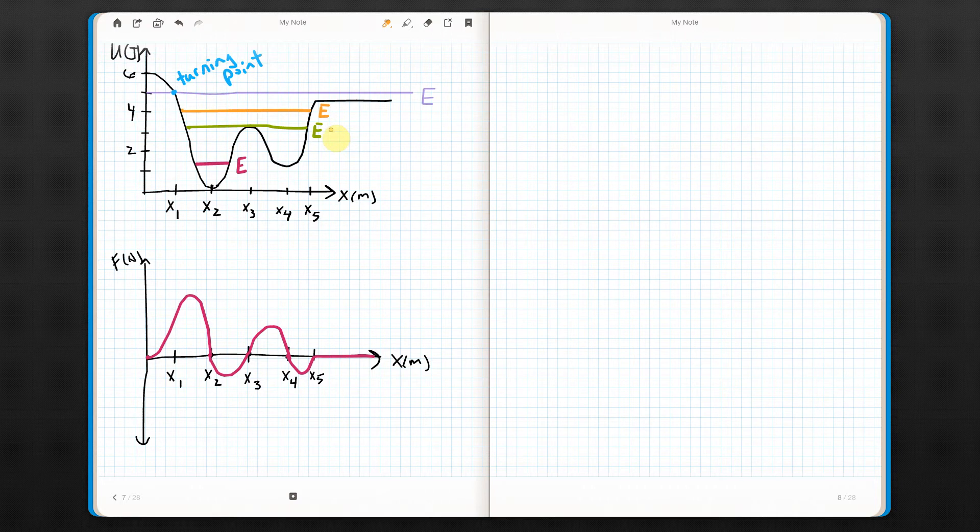Also, at any point to the right of x5, it can't get over there either. So we've got another turning point here. And notice, it can't get any higher than this. And it also, at that point, has a negative force, so it would be pushed back the other way.